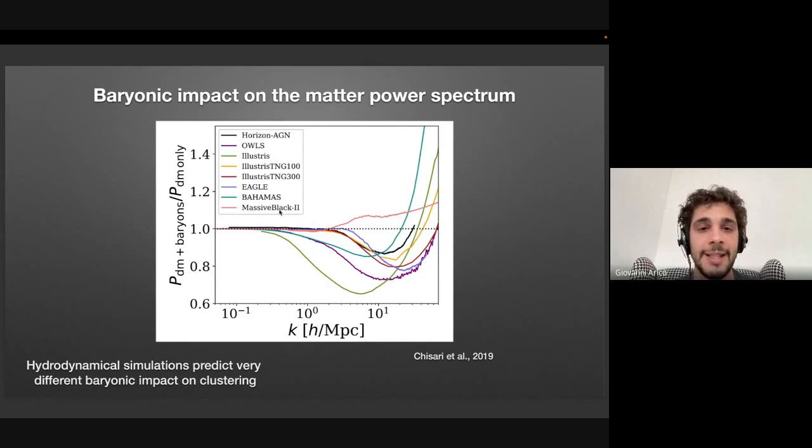And this plot is showing the prediction of different codes and different group works about this difference in clustering. And as you can see, different hydrodynamical simulations predict very different baryonic effects. So at large scales, at the left part of this plot, since we are in Fourier space, these are all converging to one. So gravity and hydrodynamical simulation agree perfectly. But at smaller scale, we have qualitatively similar shape of these baryonic effects, but quantitatively very different outputs. So these are differences of more than 50, 60 percent.